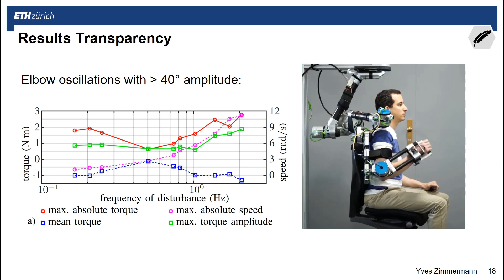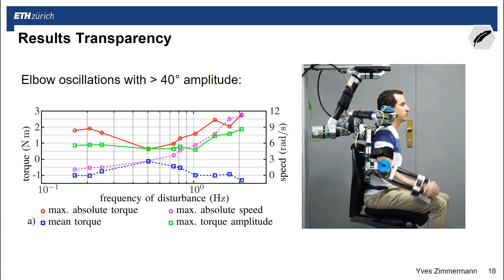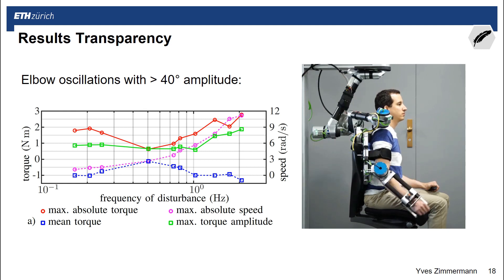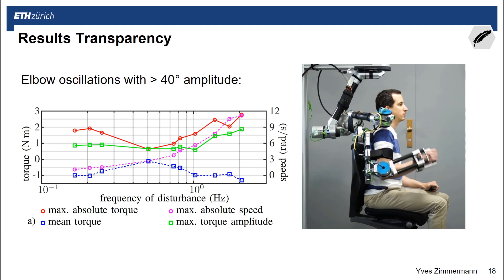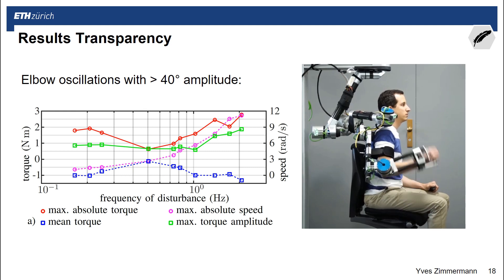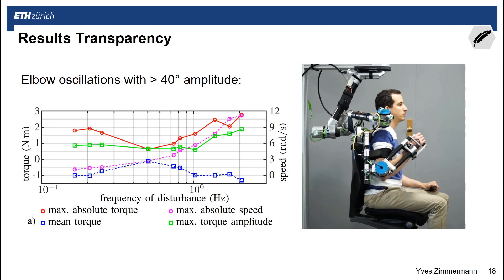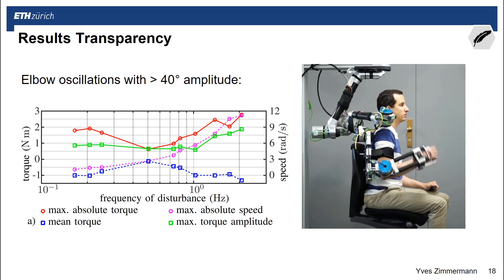We did further experiments to investigate the transparency of the robot using a model-based feed-forward controller that compensates for gravitation and nonlinear terms. Different disturbances were applied at the elbow with approximately the same amplitude but at different frequencies. The green plot showing maximum torque amplitude reveals that the torque felt by the human remains approximately the same and quite low up to 1 Hz, increases slightly up to 2 Hz but remains in a very low range, and at 2 Hz disturbances we even achieved velocities of 11 radians per second, fully utilizing the actuator speed.